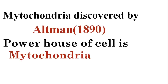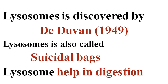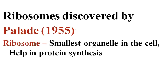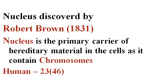Mitochondria was discovered by Altman. Mitochondria is the powerhouse of the cell. Lysosomes were discovered by De Duve. Lysosome is called the suicidal bag and helps in digestion. Ribosomes were discovered by Palade. Ribosome is the smallest organelle in the cell, which helps in protein synthesis. Nucleus was discovered by Robert Brown.